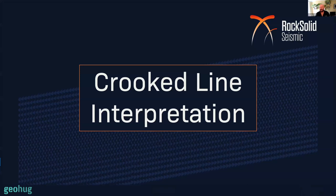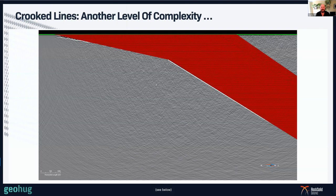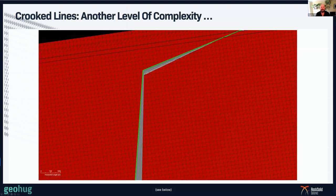A crooked line interpretation is where things get really tricky. When we're looking at GA datasets there are lots of crooked lines, so bear this in mind when looking at regional datasets because they can give false indications. Here we have a crooked 2D line on a single set of planar reflectors. As we go around the corner, we're seeing off-plane things interacting with things closer to being on-plane. That's going to give a weird-looking response where it looks like there's a big fold — but it's not a fold at all, it's related to the geometry of our seismic line.